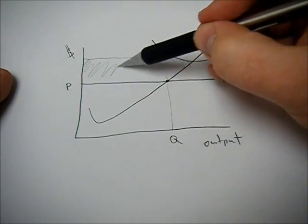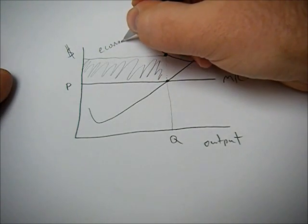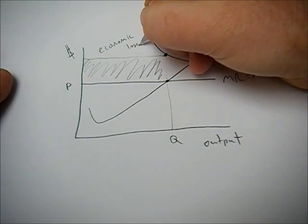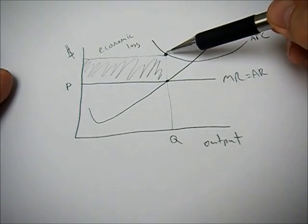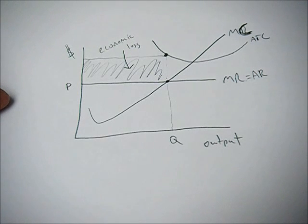And this rectangle right here will be our economic loss. And it's our economic loss because our cost is higher than our revenue. So that's a bad thing. In the long run, firms will leave the market because they're making an economic loss. They can take advantage of opportunities elsewhere.